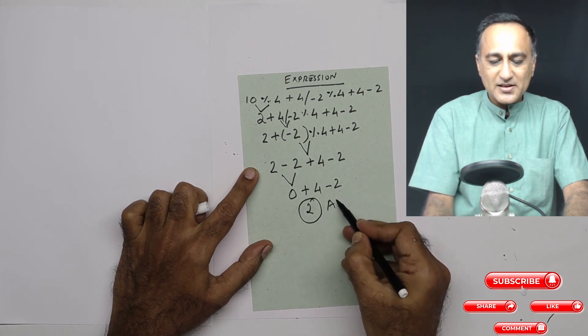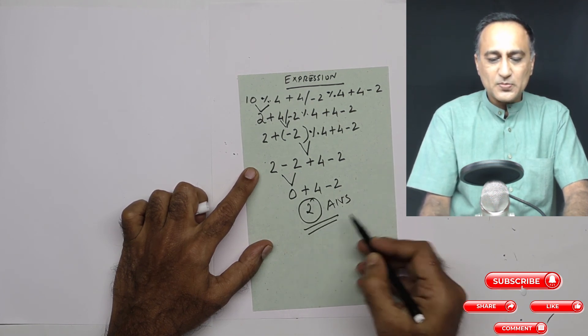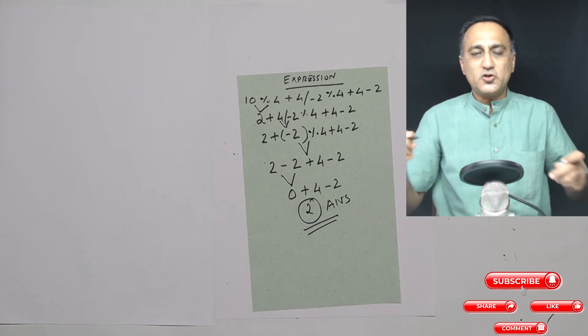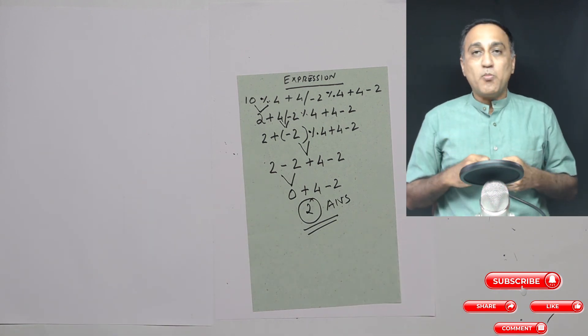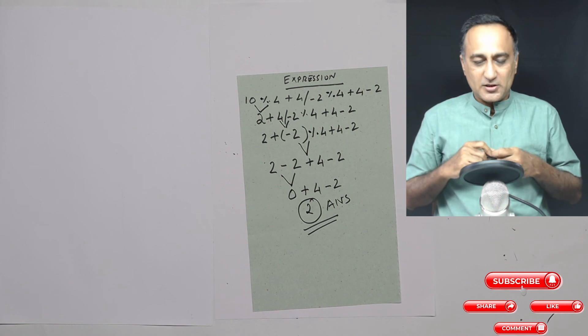So 2 is the answer after evaluating this particular expression. This should give you an idea about how you go about evaluating a mathematical expression. All right.